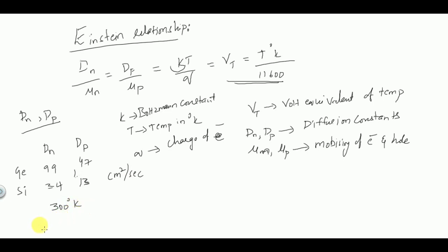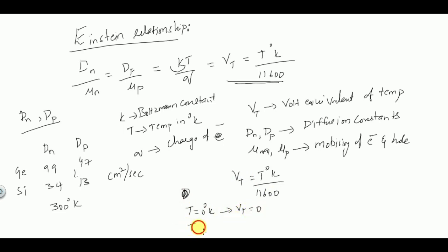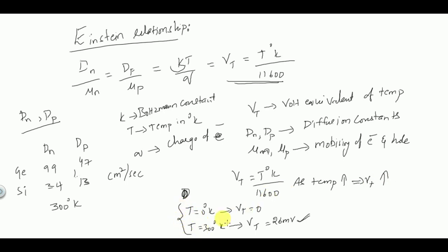Using Vt = T(K)/11600: at absolute zero (T = 0 K), Vt = 0, and at room temperature (T = 300 K), Vt = 26 millivolts — this value is very important to remember. Although Vt increases with temperature, the variation is very small even for large temperature changes.